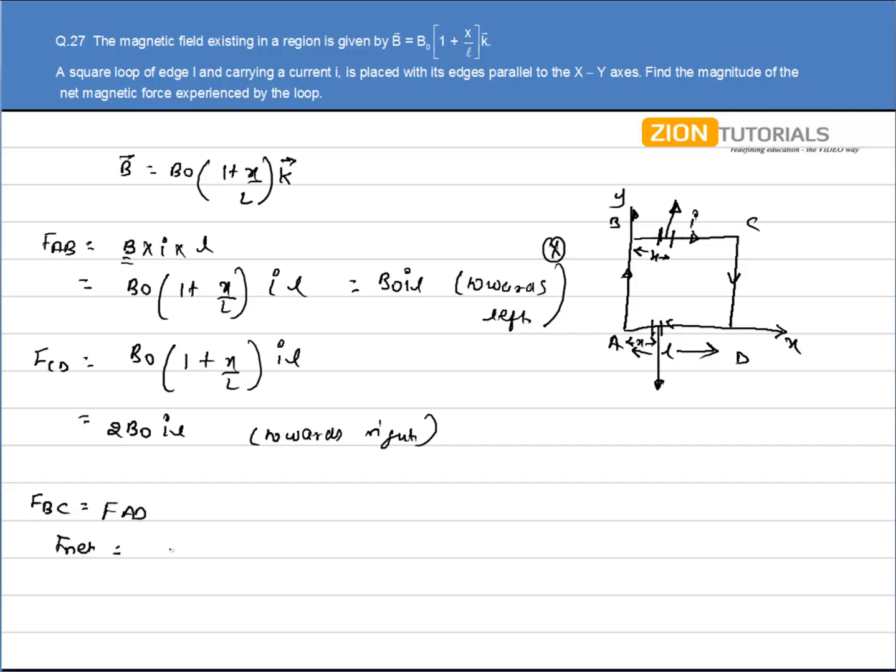The net force on the complete loop will be only due to AB and CD. That is force due to AB vector plus force due to CD vector. So I can write 2B₀IL minus B₀IL, which gives me B₀IL towards right. That is my answer.